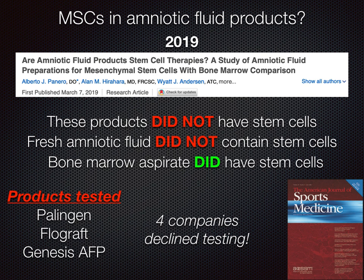This is another recent 2019 publication authored by Alberto Pinero, Dr. Alan Hirahara, and Wyatt Anderson, published in the American Journal of Sports Medicine. They tested multiple amniotic fluid products; seven companies were invited and only three sent product — four companies declined testing. These products did not have stem cells. Critically, they also tested fresh amniotic fluid and found it did not contain significant stem cells as defined by current international standards. As a control, they tested bone marrow aspirate and did find that it had living functional stem cells that could grow in culture and meet all criteria.